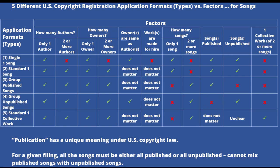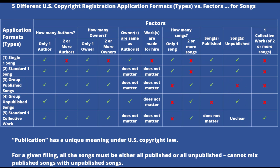Whereas if you had two or more songs that were unpublished, then approach three would not work, but approach four would work. When you're doing a copyright registration application in general, if you're doing two or more songs, all the songs have to be published or all the songs have to be unpublished for that particular filing. You generally could not include published songs mixed with unpublished songs. Recall that publication has a unique meaning under U.S. copyright law, which we will go over shortly.